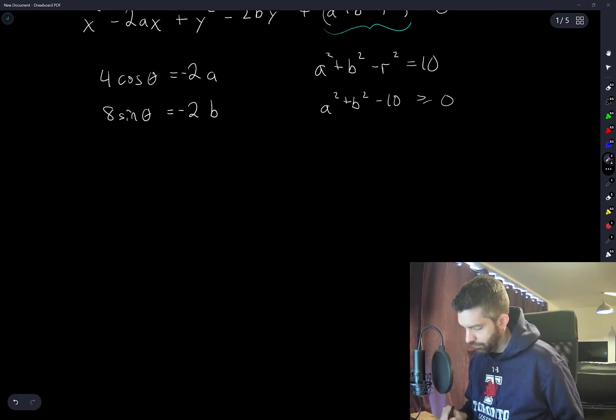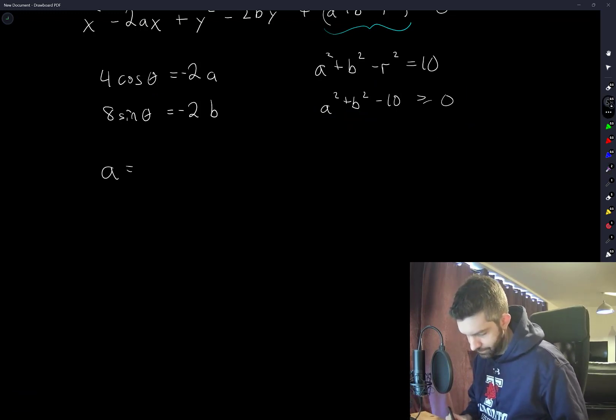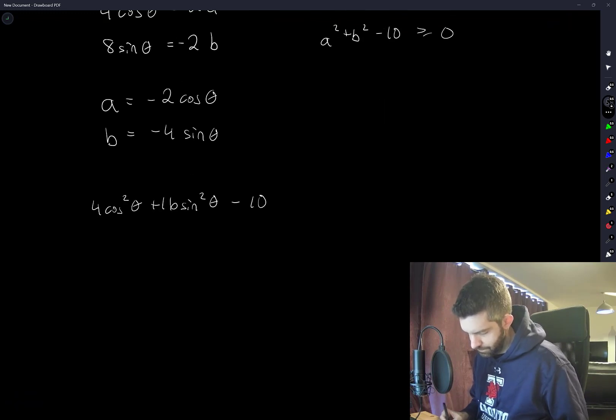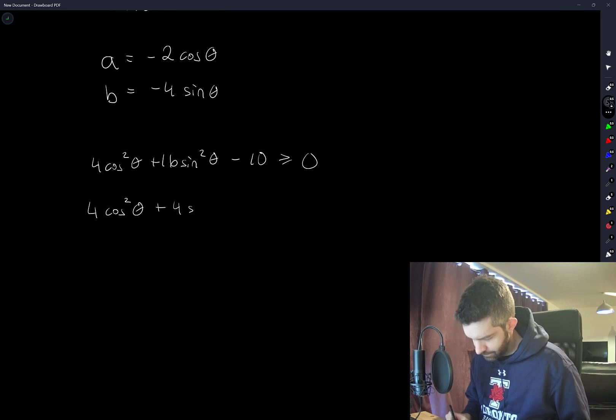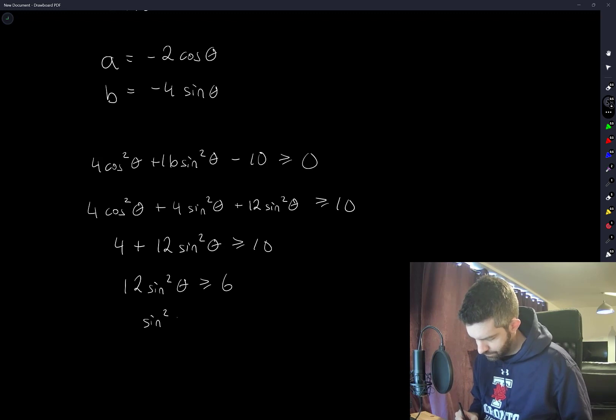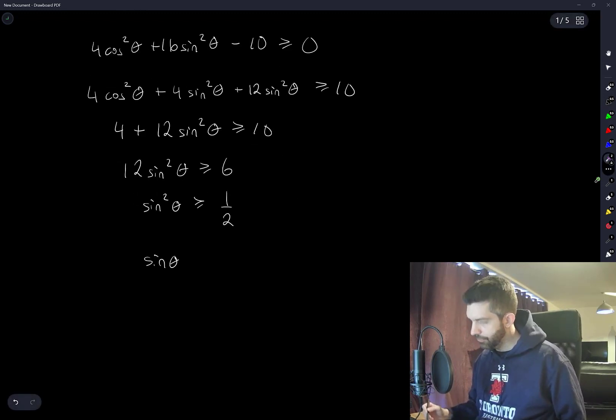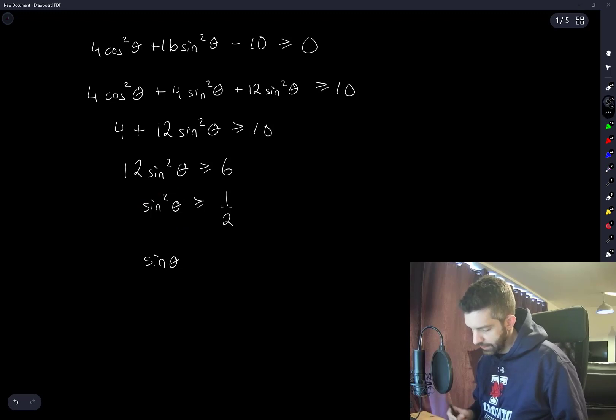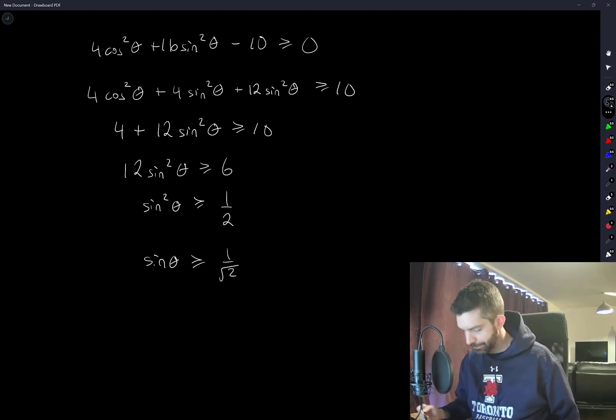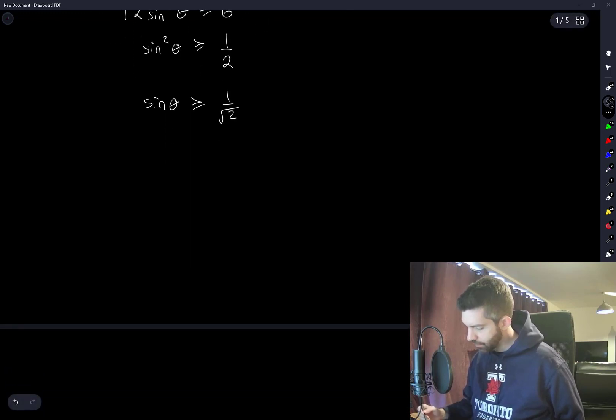And so what I'm going to do now is I'm going to substitute values, substitute what a and b are from these expressions and see when this inequality is true or false. Now because in the original question theta is between 0 and π, if you know what the graph of sin(θ) looks like, we only need to take the positive root. OK, and when is sin(θ) greater than or equal to 1 over √2?